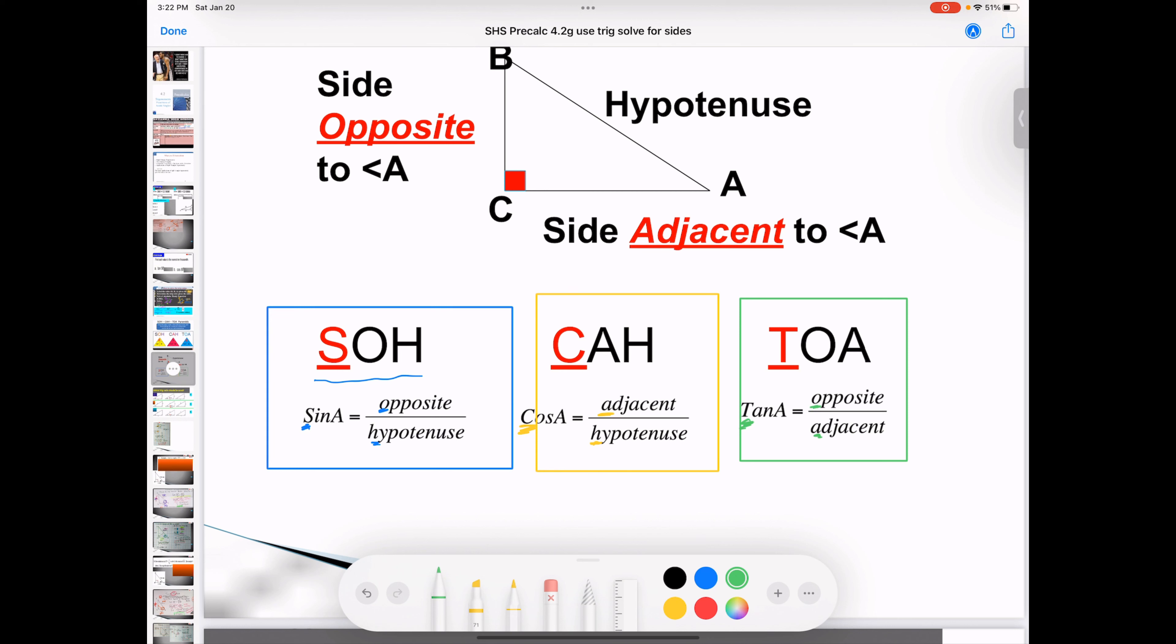So in this problem, the starting point is angle A. So I recommend to circle it or put a star around it. Then going across, there's your opposite. Always across the right angle is the hypotenuse, the longest side. So the opposite will be the middle. Sometimes it can be the other way around. And the adjacent is next to.